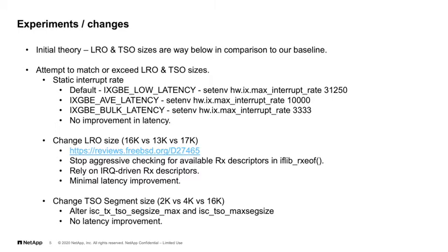With Intel's change, yes indeed, we have LRO size bumped to 17k. The values: 16k is our baseline, 13k is our iflib baseline without Intel's change, and 17k is with Intel's change — so in fact we are 1k greater than our baseline. There is improvement in latency, maybe 1x, but still we are nowhere close to our baseline. So we thought maybe we also need the TSO segment size increase, and we started tweaking from 2k, 4k to 16k. But in fact, there was no latency improvement beyond what we had with LRO.